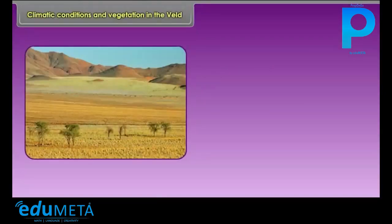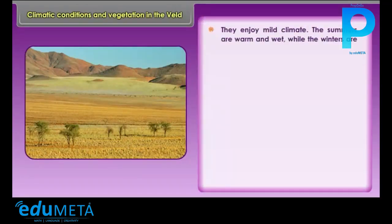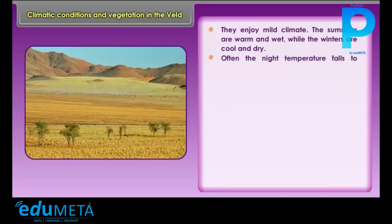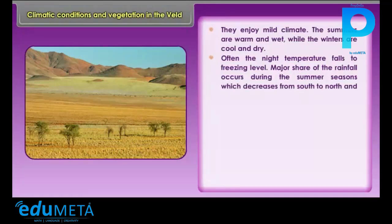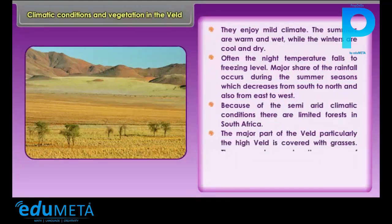The Veld enjoys a mild climate. The summers are warm and wet, while the winters are cool and dry. Often the night temperature falls to freezing level. The major share of rainfall occurs during the summer seasons, which decreases from south to north and also from east to west. Because of the semi-arid climatic conditions, there are limited forests in South Africa. The major part of the Veld, particularly the high Veld, is covered with grasses.